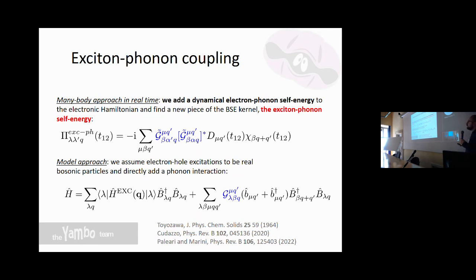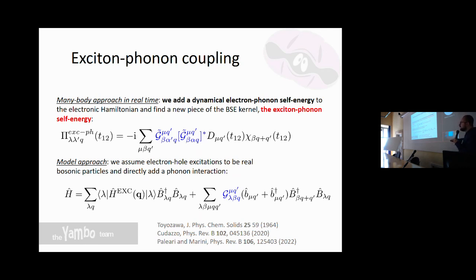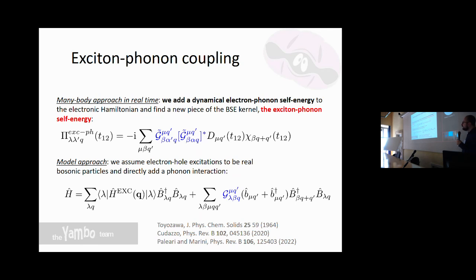Another approach is model-based: rather than starting from the electronic Hamiltonian, we start directly from the excitonic Hamiltonian obtained when inverting the Dyson equation of the static BSE. We treat this as a starting Hamiltonian describing bosonic particles — assuming excitons are real bosons — and then include an interaction with a phonon bath. These two approaches do not give exactly the same result, and in principle the second one should be questioned for strongly out-of-equilibrium situations.